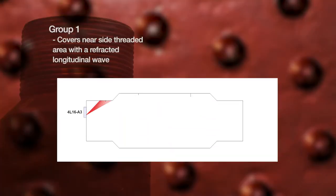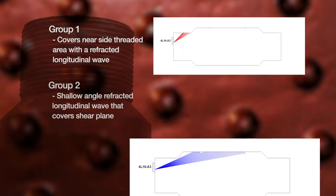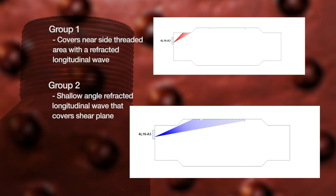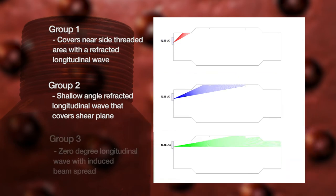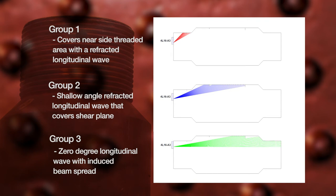Group 1 covers the near side threaded area with a refracted longitudinal wave. Group 2 is a shallow angle refracted longitudinal wave that covers the shear plane. Group 3 is a zero degree longitudinal wave with induced beam spread used to detect large cracks and monitor for back wall dropout to help ensure coupling.